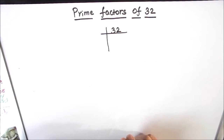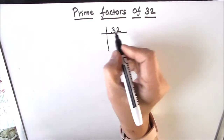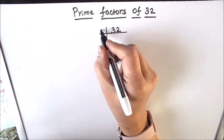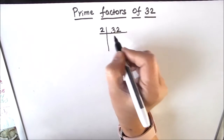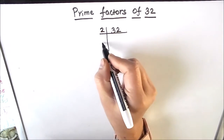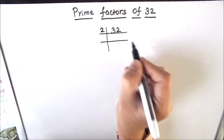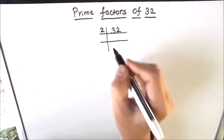To find the prime factors, we divide the number by prime numbers. So let's divide 32 by the first prime number, 2. As 32 is an even number, it is fully divisible by number 2.